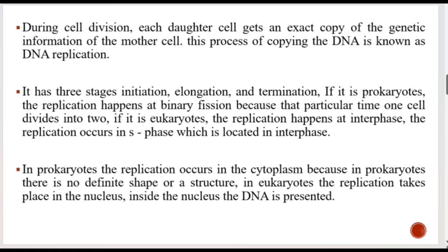During cell division, each daughter cell receives an exact copy of the genetic information of the mother cell. This process is known as DNA replication, and it has three stages: initiation, elongation, and termination. In prokaryotes, replication occurs during binary fission in the cytoplasm, as there is no defined nucleus. In eukaryotes, replication occurs during the S phase of interphase and takes place within the nucleus, where the DNA resides.